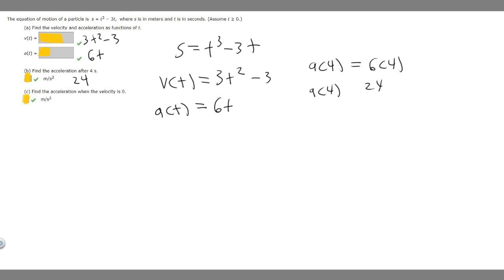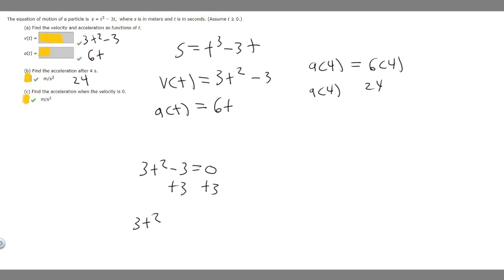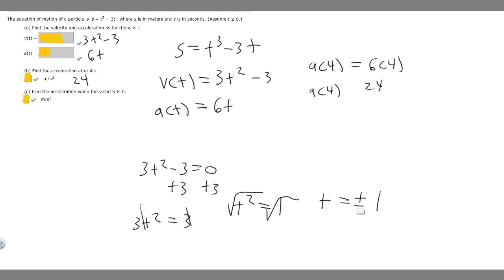Now we want to find the acceleration when velocity is 0. We take our velocity function and set it equal to 0: 3t squared minus 3 equals 0. Adding 3 to both sides gives 3t squared equals 3. Dividing by 3 gives t squared equals 1. Taking the square root of both sides, t equals plus or minus 1. Since time can only be positive, t equals 1. Plugging into our acceleration function, a of 1 equals 6 times 1, which equals 6. So the acceleration when velocity is 0 is 6 meters per second squared.